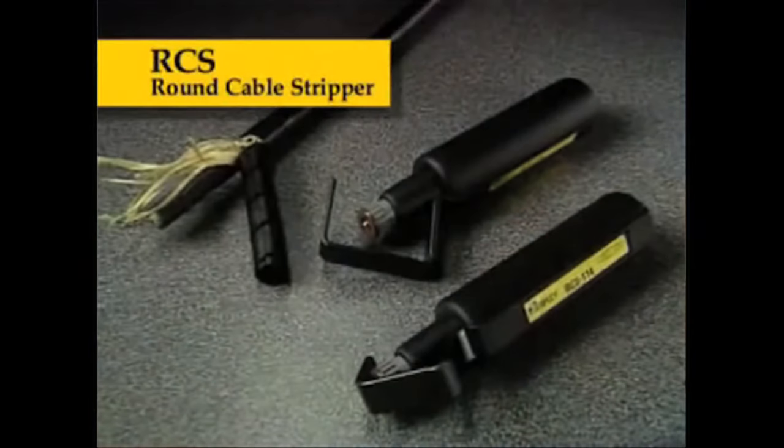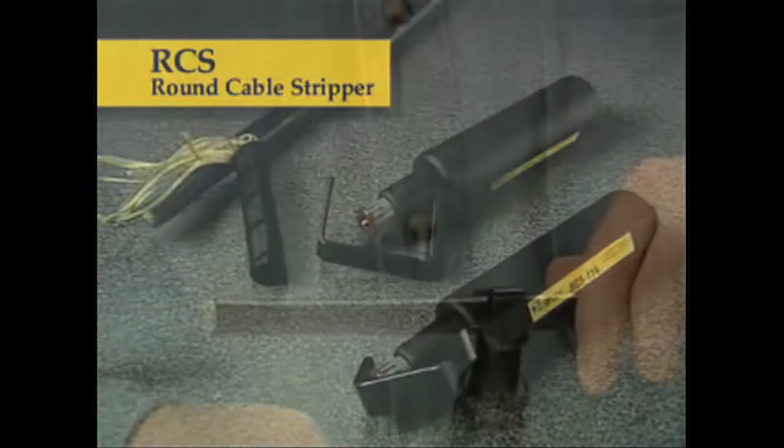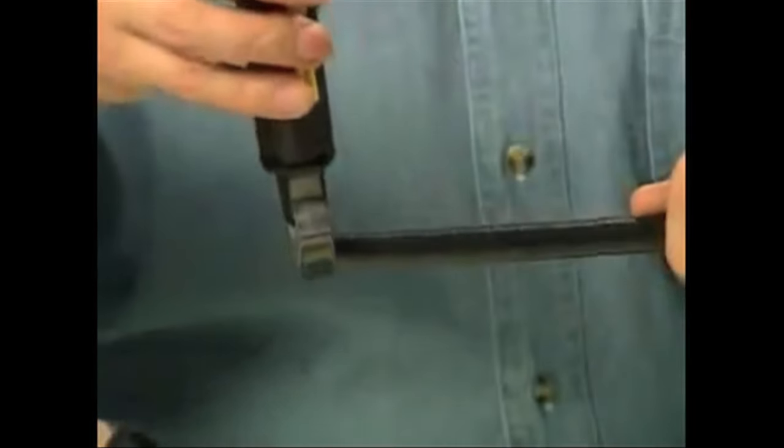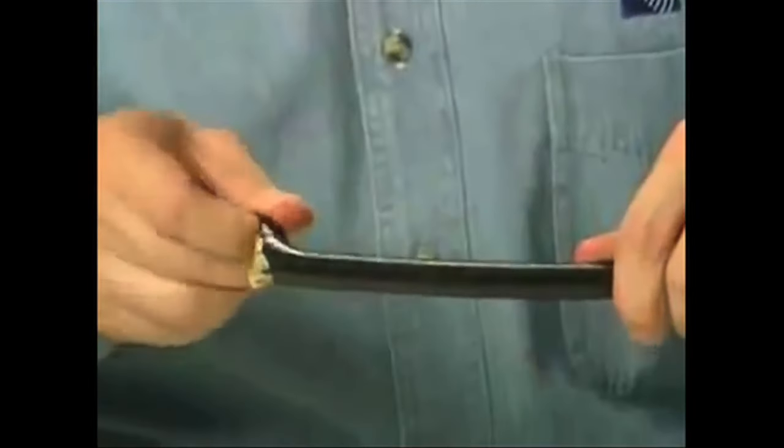Use the RCS114 and the RCS158 round cable strippers on distribution loose tube cable designed for fast, safe, and precise jacket removal.